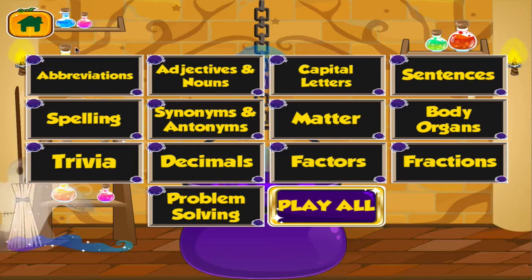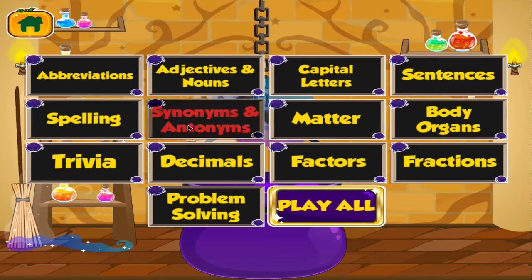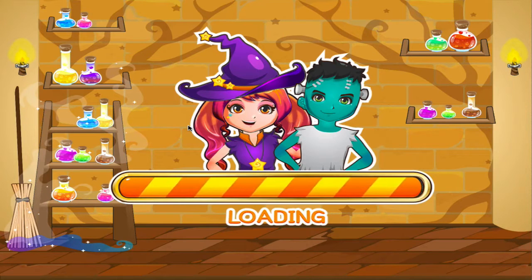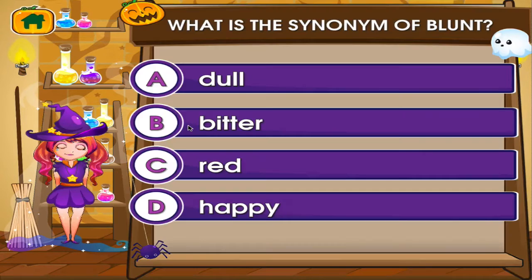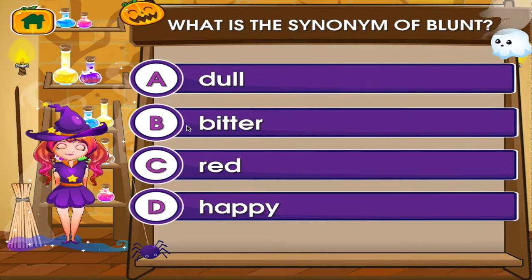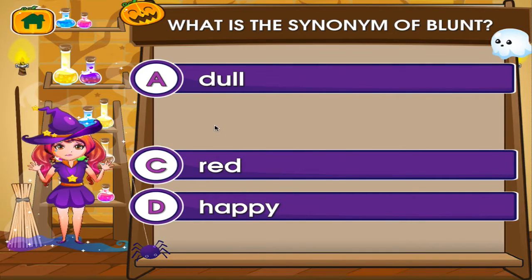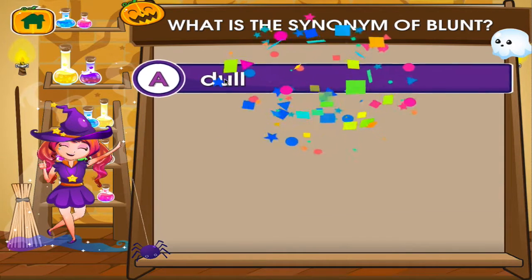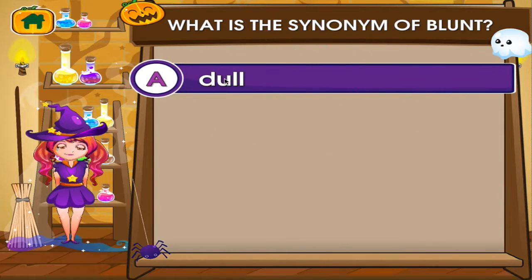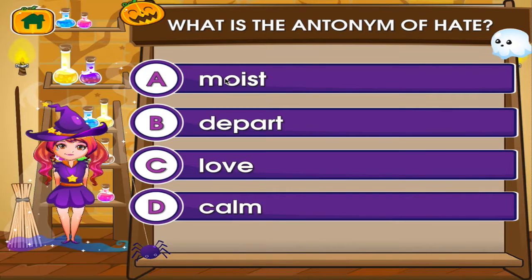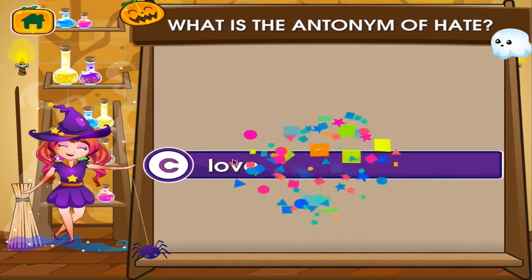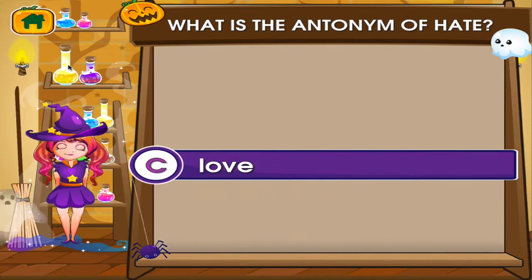Choose the activity you want to play. Synonyms and antonyms. Tap the correct answer. Uh-oh! It's not marvelous! Tap the correct answer. See? You can do this!